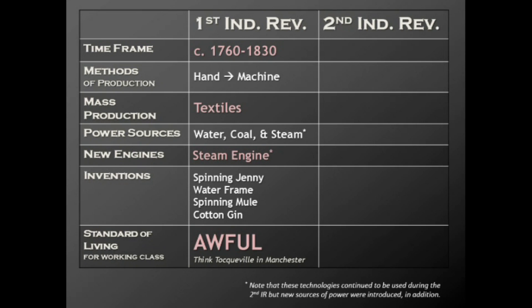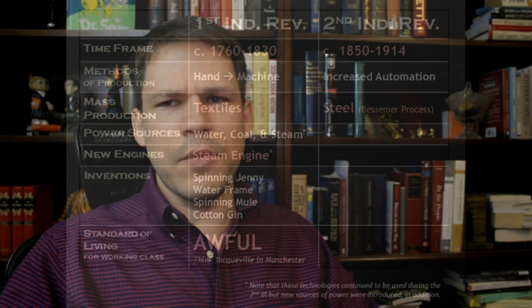The second Industrial Revolution, after a little break, bounces back around 1850 and goes on until 1914 — the year World War One started. As far as methods of production, we're dealing with increased automation: less and less human effort is required to produce goods and power. What's being mass-produced during this time is steel, through the Bessemer process — a process that makes the mass production of steel possible.